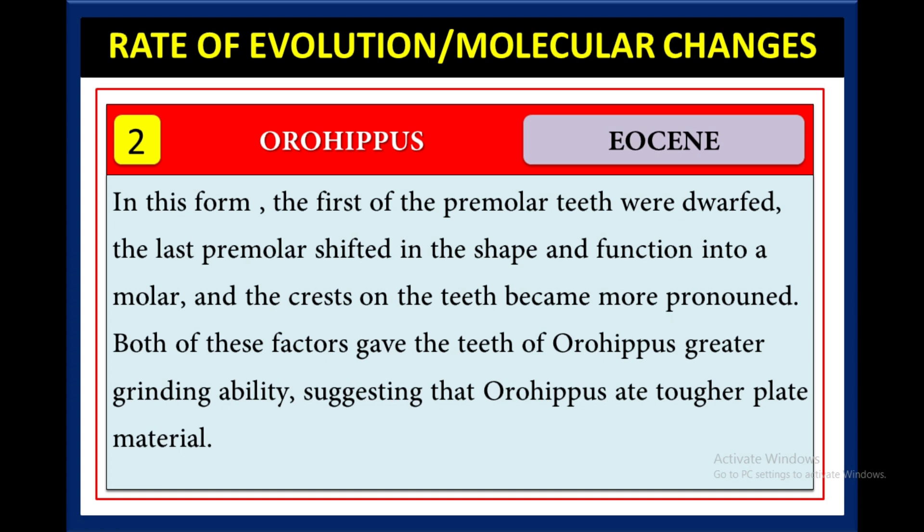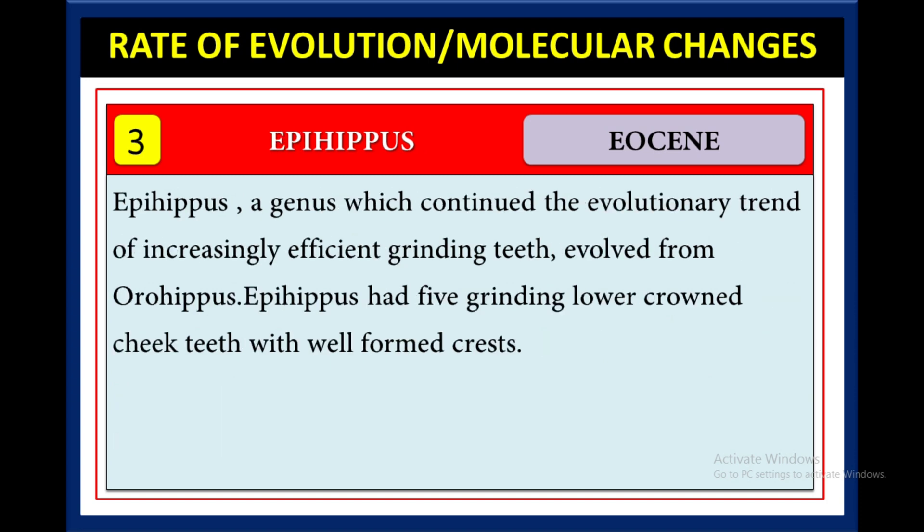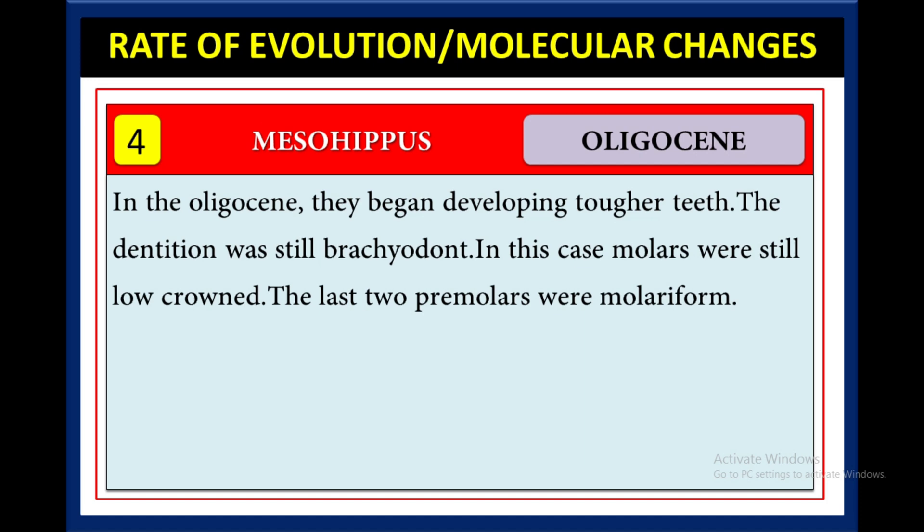Next, in the period of Eocene, Eohippus came. Eohippus, a genus which continued the evolutionary trend of increasingly efficient grinding teeth, evolved from Orohippus. Eohippus had five grinding lower-crown cheek teeth with well-formed crests.